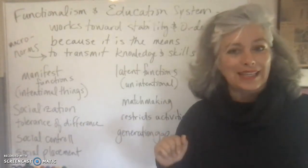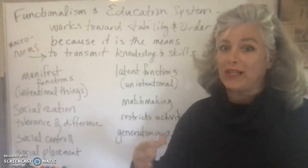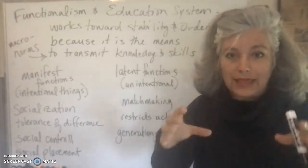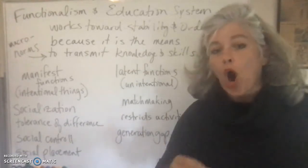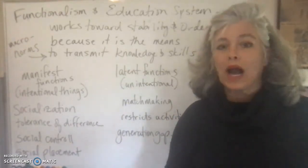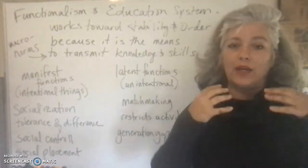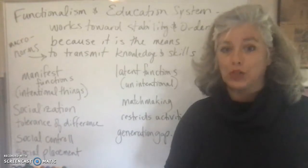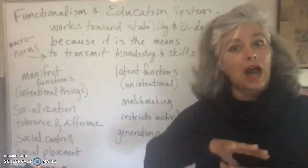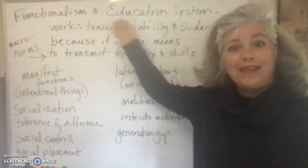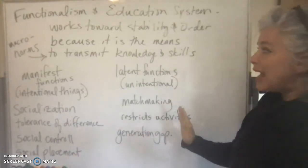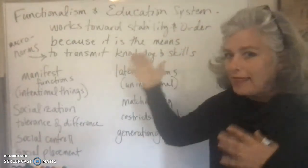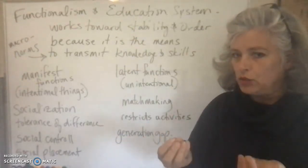In this lesson we're going to look at functionalism, one of our macro scale points of view. We put that lens on and ask: what kind of positive effect, what kind of stability, or how does it create order for society as a whole? That's always the question when you use functionalism as your perspective. We're going to apply that to the education system at the social institution level and ask: how does it work towards stability and order in society?